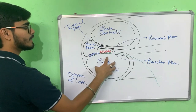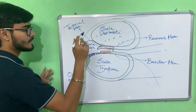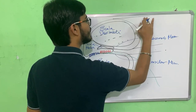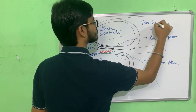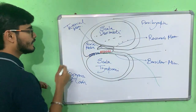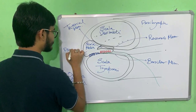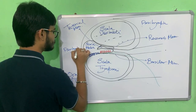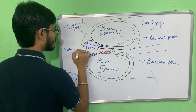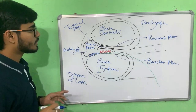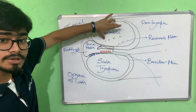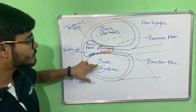The scala vestibuli and scala tympani are fluid-filled cavities containing a fluid known as perilymph. The scala media contains a fluid known as endolymph. The oval window is connected to the scala vestibuli and the round window is connected to the scala tympani.